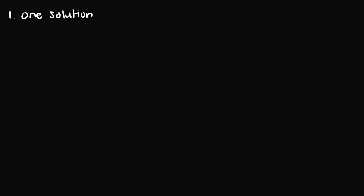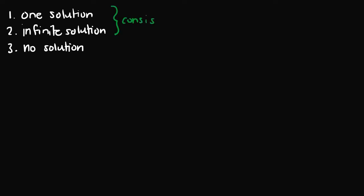In this video I want to talk about systems of linear equations and the three basic types of solution sets they may have. Every system of linear equations may have one of these three solutions. The first is one solution, the second type is infinite solutions, and the third type is no solution. For these three types, the first two are called consistent solutions, meaning the system has at least one solution.